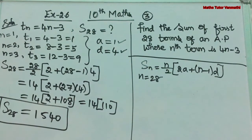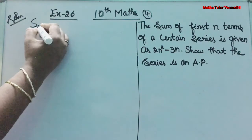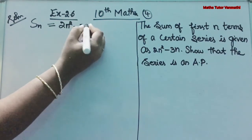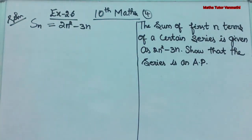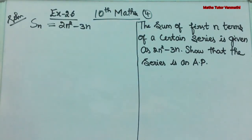Exercise 2.6, fourth problem: The sum of first N terms of a certain series is given as 2N² − 3N. Show that the series is an AP. The sum of first N terms is denoted SN and it is given by 2N² − 3N. From this we will obtain a series and show it is in arithmetic progression.